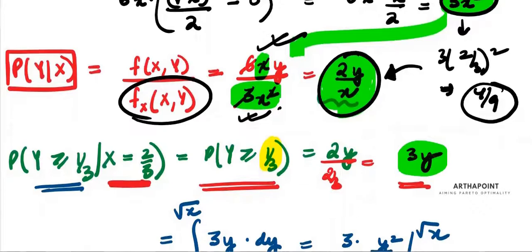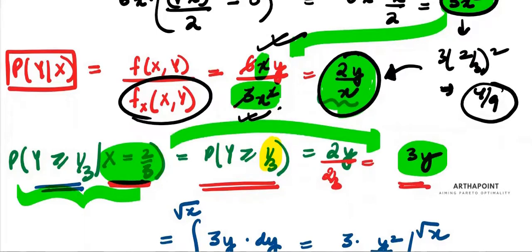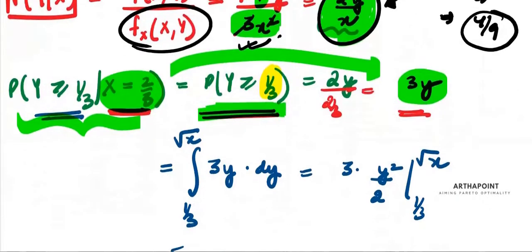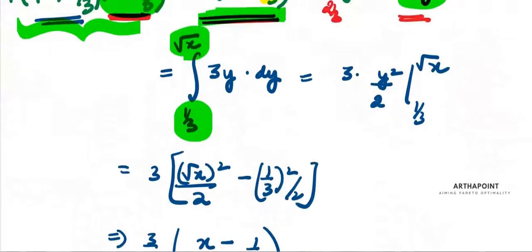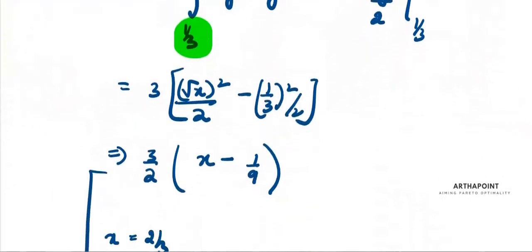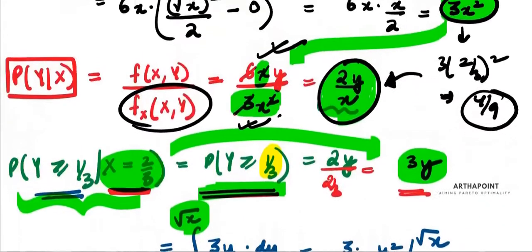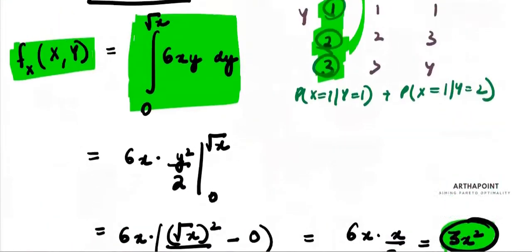With x = 2/3, the conditional density is 3y. We then just ensure y ≥ 1/3, so we integrated from 1/3 to the upper limit of y, and again substituted x = 2/3 at the end. That is how you solve this problem. The final answer is 5/6.